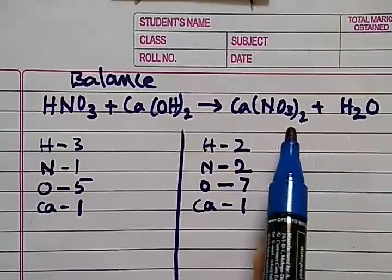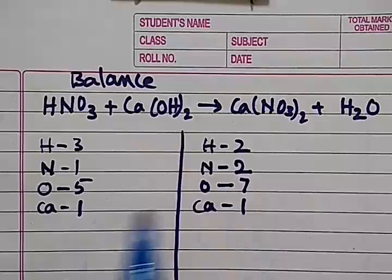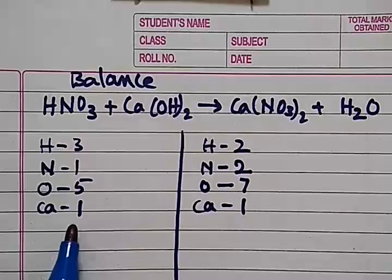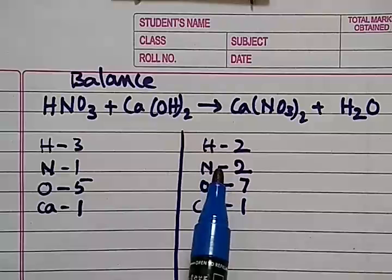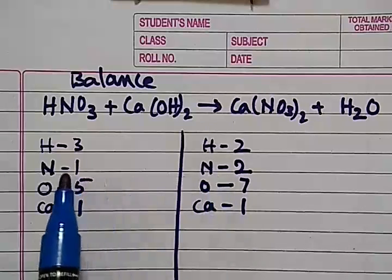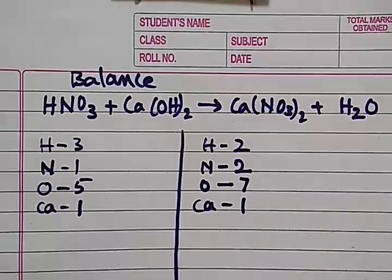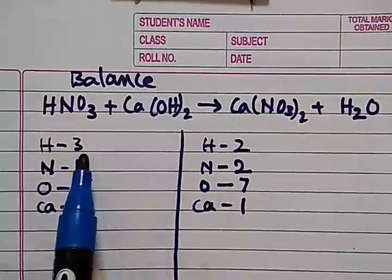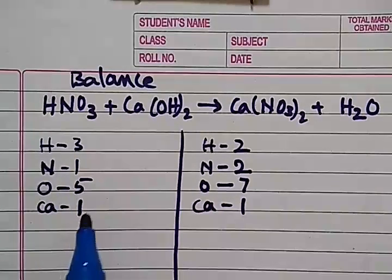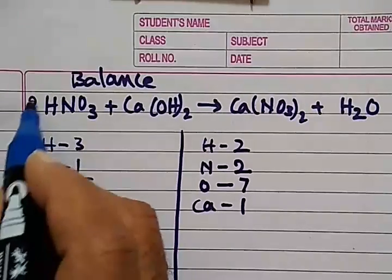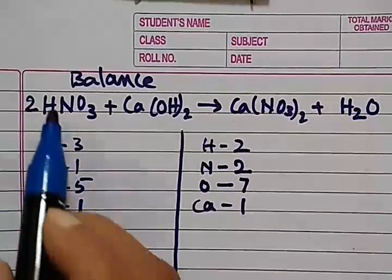Nitrogen here it is one, here two is there. So what we have to do, we have to balance this side. We will make nitrogen two, we put in two here. So this will change the numbers now.